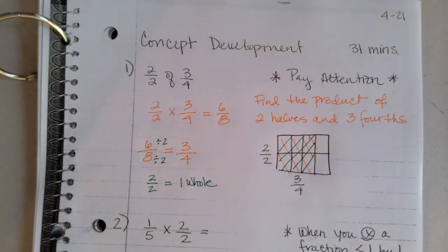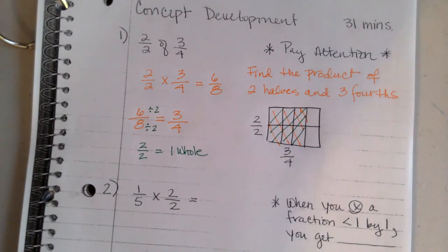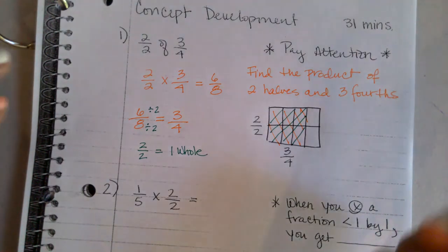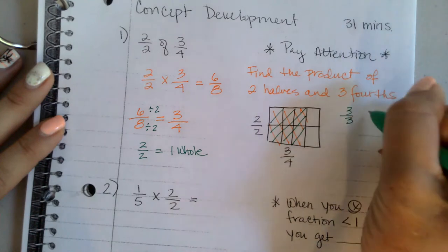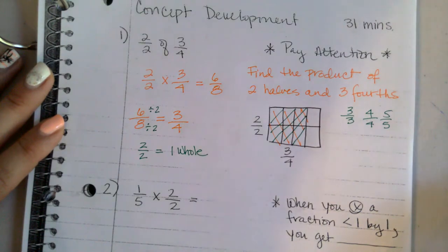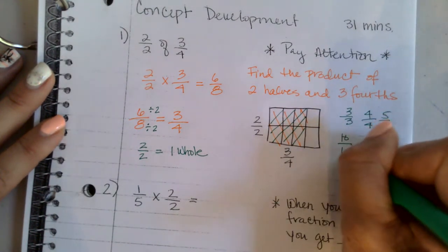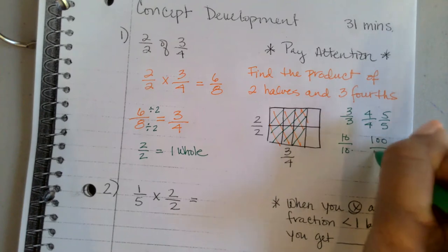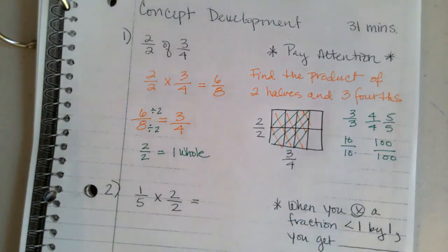Our beginning amount, three-fourths, didn't change because we multiplied by one. What are other fractions equal to one? Three-thirds, four-fourths, five-fifths, ten-tenths, one million over a million, one hundred over one hundred — they're all still equal to one.